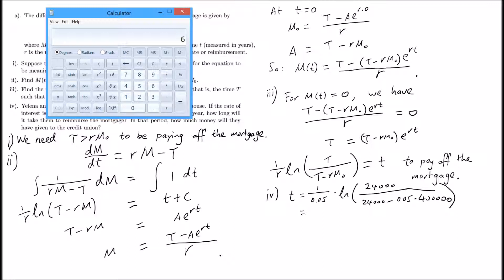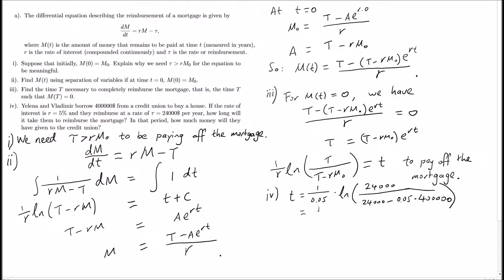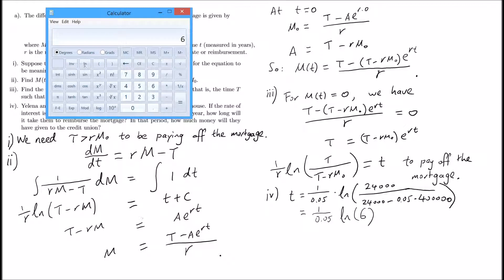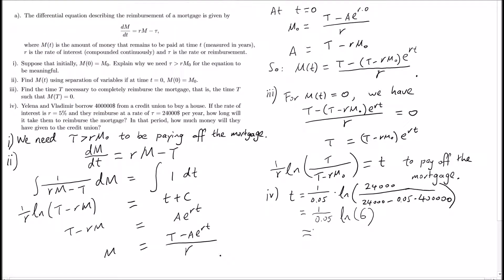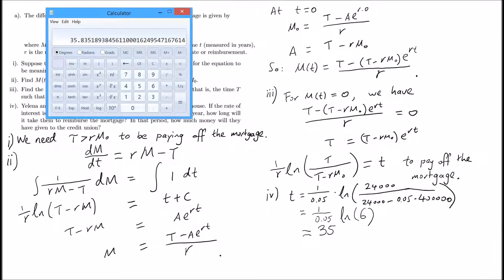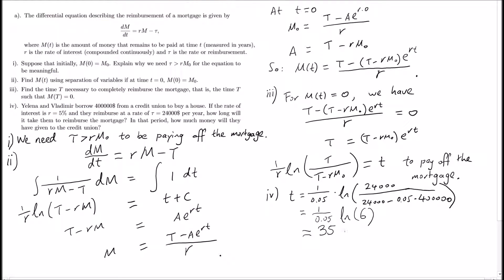Using our calculator, taking the log of 6 and then dividing by 0.05, which gives us 35.8 years. So that's how long it takes to pay off the mortgage.